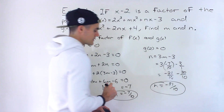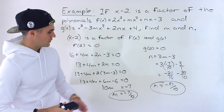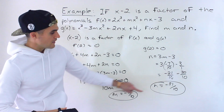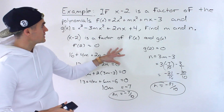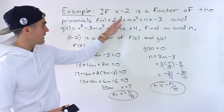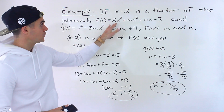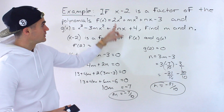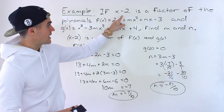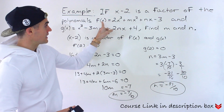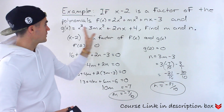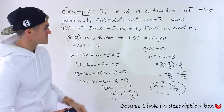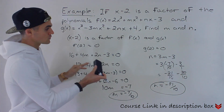So that's the answer: m equals negative 7 over 10 and n equals negative 51 over 10. If you get a question like this where something is a factor of two polynomials — basically if it's x minus a, then f of a equals 0 and g of a equals 0 because the remainder is 0. Create your two equations and solve for the two unknowns.